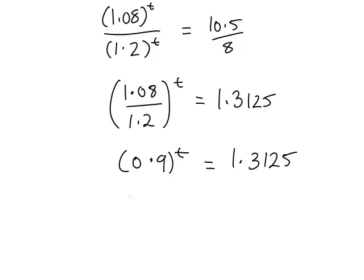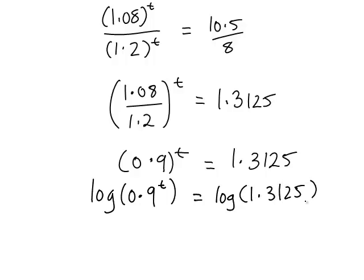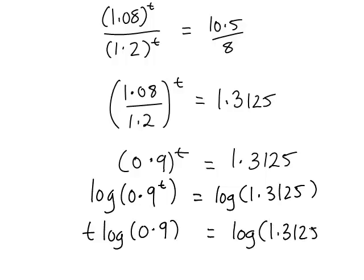So now it will be the same process as before. Take logs of both sides, and again we could do this log base 10 or log base e on the calculator. So log of 0.9 to the t equals log of 1.3125. Again, we can use our property that the left hand side is the same as t times log of 0.9 equal to log of 1.3125.